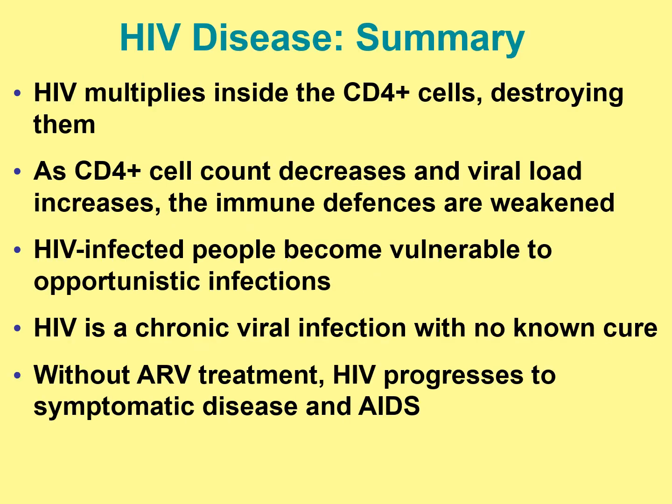Heart cardiomyopathy can also result. In summary, HIV multiplies inside the CD4-plus cells and eventually destroys them. As CD4 count decreases, viral load increases and immune defenses are weakened. HIV eventually becomes vulnerable to opportunistic infections. It is a chronic viral infection with no known cure, and without antiretroviral treatment, HIV progresses to symptomatic disease and AIDS.